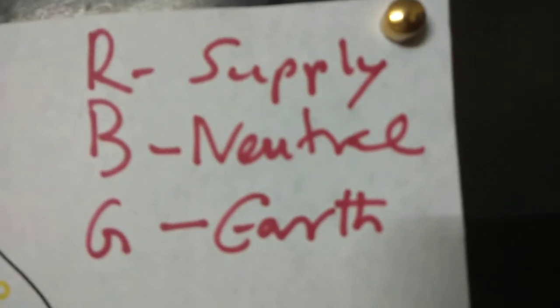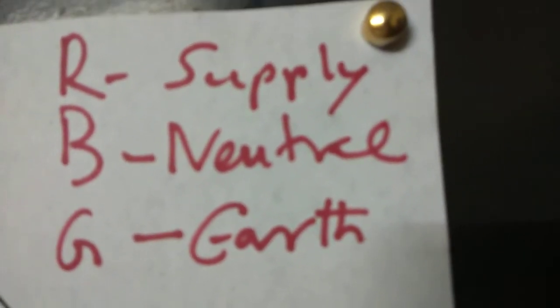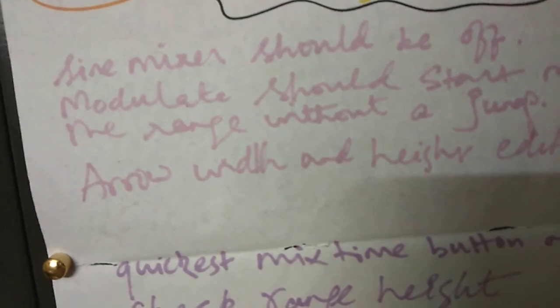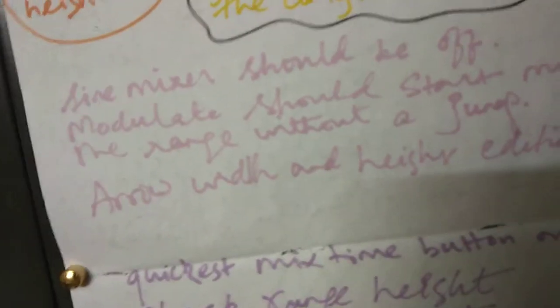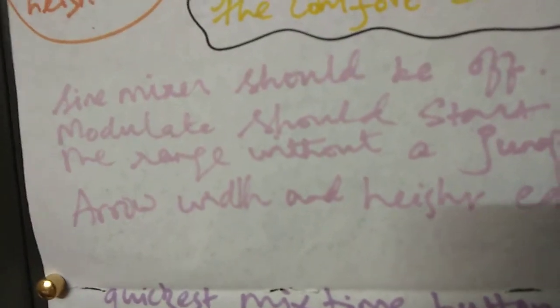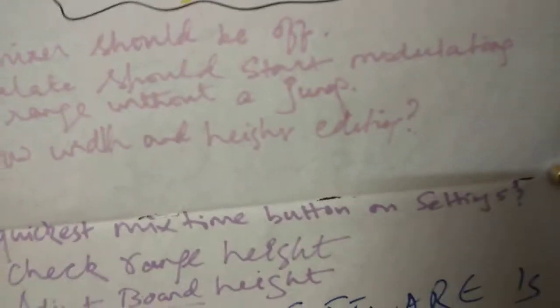This has got nothing to do with DIN because we're trying to do some electricity supply here. This is a bunch of things to do still. Sign mixer should be off. Modulate should start modulating the range without the jump. Arrow width and arrow height editing — of the drone arrow. Why not edit? That's what gave this philosophy: software is too serious. Why not just edit? I love the user to edit the arrow, the velocity pointer, the look of that. So let's just keep it loose.